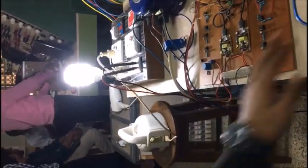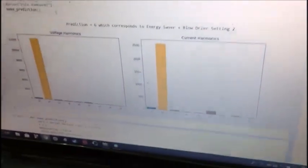We have the energy saver plus blow dryer and we're going to check what prediction it makes on this. Prediction equals 6 which corresponds to energy saver plus blow dryer setting 2.